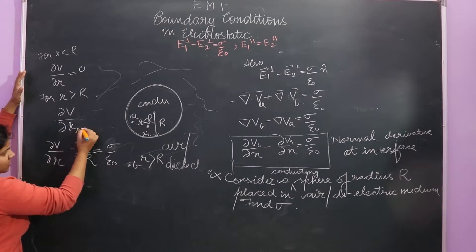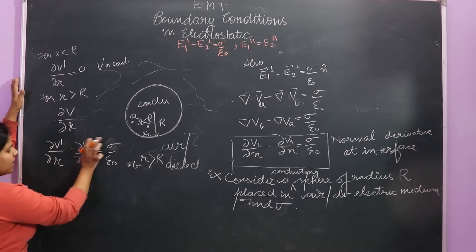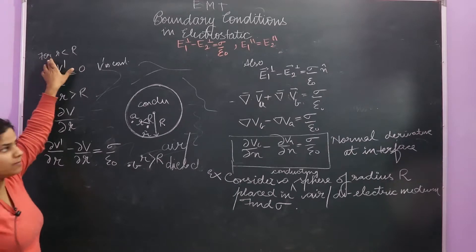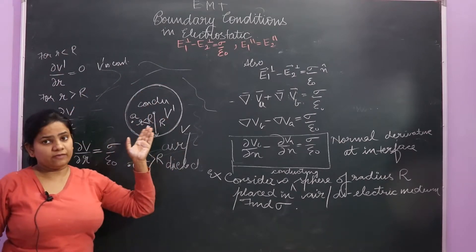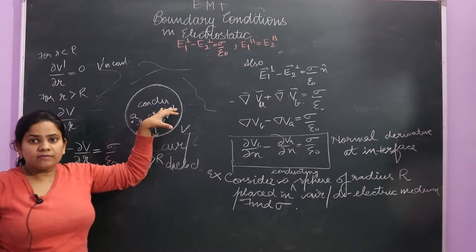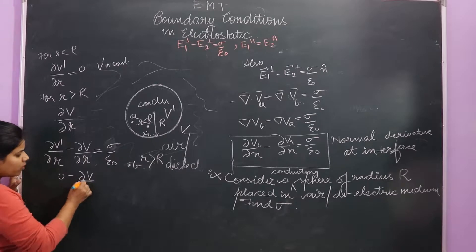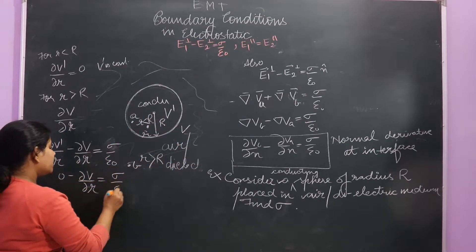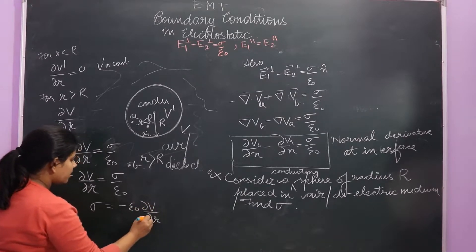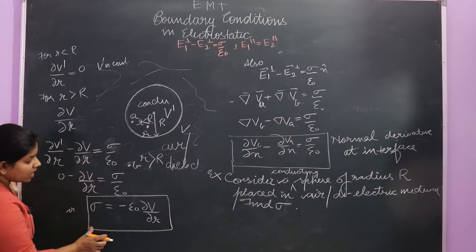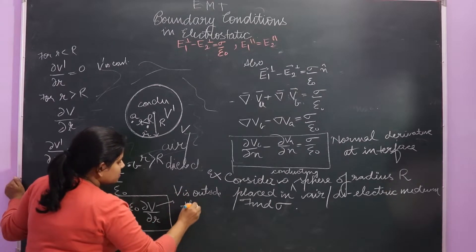In this case, del V upon del r — this potential V is constant inside, so del V upon del r will be zero. But outside it gives some value. So zero minus del V upon del r for the outside becomes σ upon ε₀. Therefore σ = −ε₀ · del V/del r. Keep in mind this is the potential V outside the sphere.